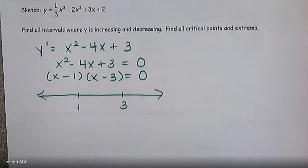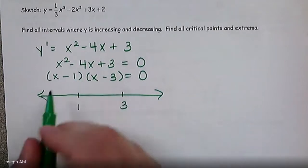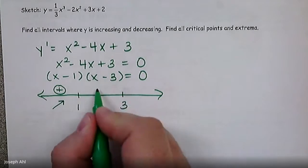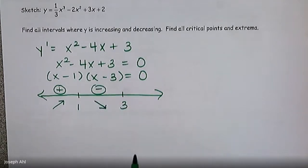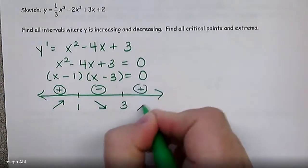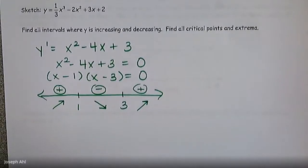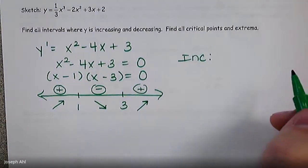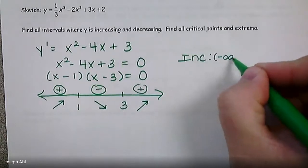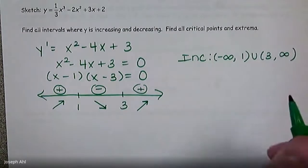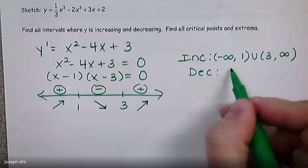This factors nicely into (x minus 1)(x minus 3), so we place 1 and 3 on the number line and do quick tests to see where we get positives and negatives. Testing 0 to the left of 1 gives negative times negative, which is positive — the graph is increasing from negative infinity to 1. Testing 2 gives positive times negative, which is negative, so the graph switches to decreasing. Testing 4 gives positive times positive, so we switch back to increasing. The graph is increasing on (−∞, 1) and (3, ∞), and decreasing on (1, 3).